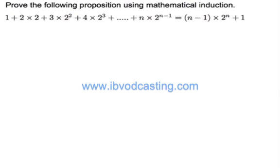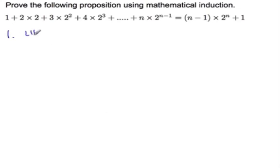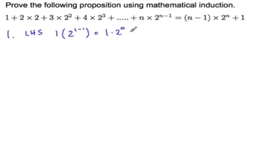Hello, this is Rick White, and this is a podcast on mathematical induction. So if we start with our usual number 1, we start with our left-hand side. We have 1 times 2 to the 1 minus 1, which equals 1 times 2 to the 0, which is 1.